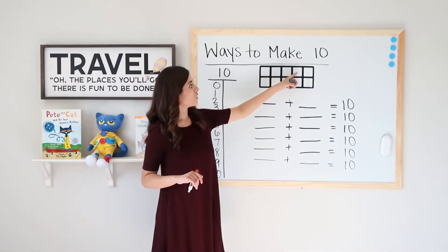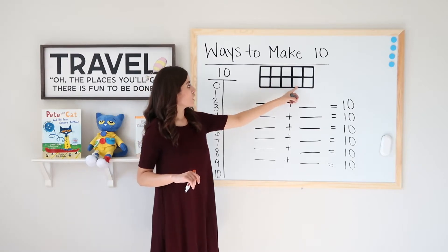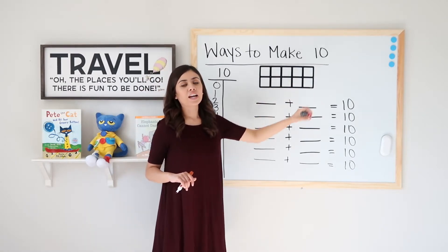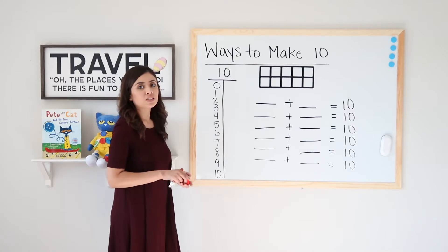1, 2, 3, 4, 5 in the top row and 5 in the bottom row. All together, I have 10. Okay, so let's go ahead and start.